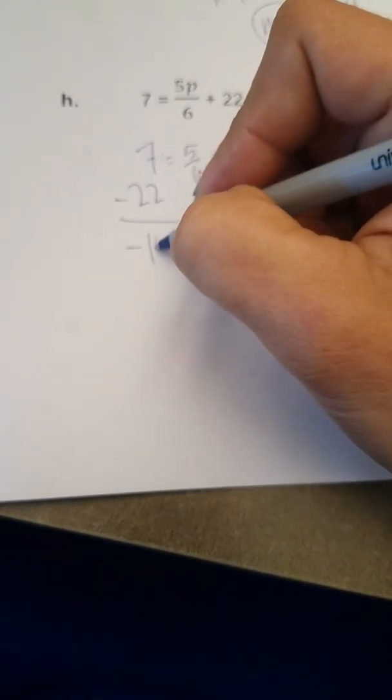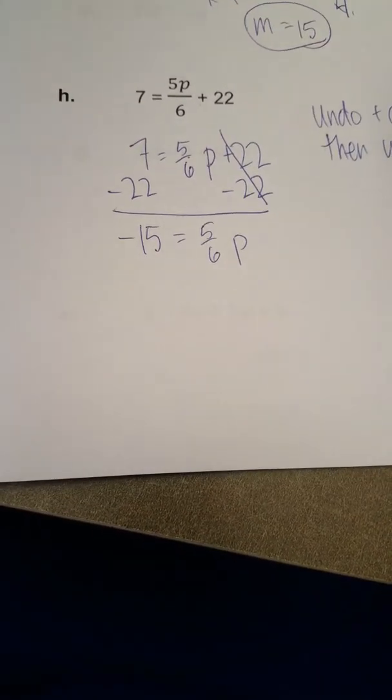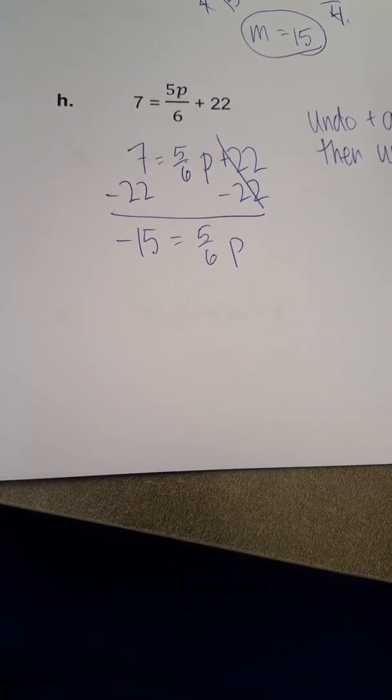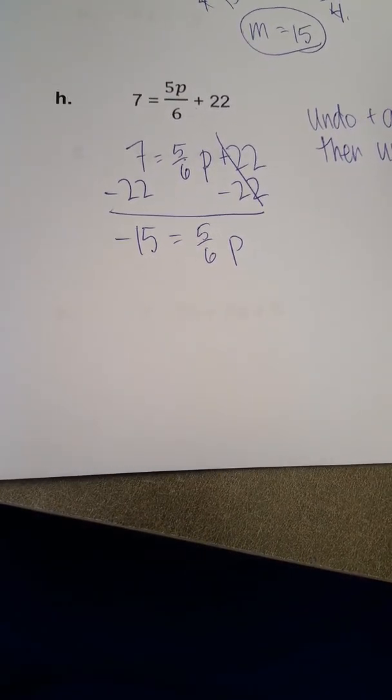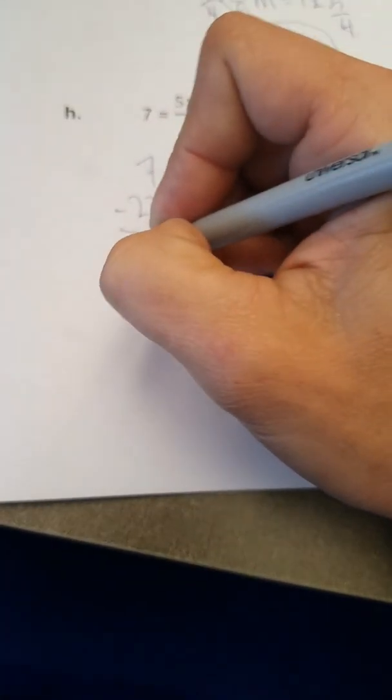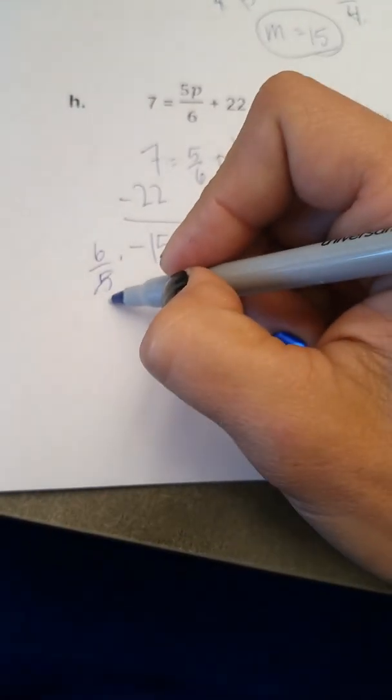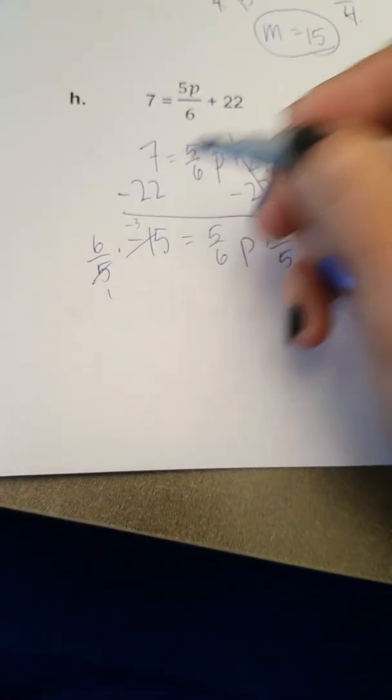So p is still being multiplied by 5 over 6, so to undo that multiplication, we multiply both sides of the equation by 6 fifths. And so when we multiply on the left, 5 goes into 5 once and into negative 15, negative 3 times. So we have 6 times negative 3 is negative 18. And then on the right, all the fractions will cancel out and leave us with just p. So we get p is equal to negative 18.